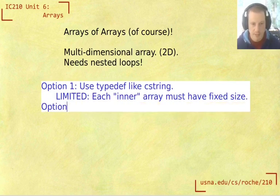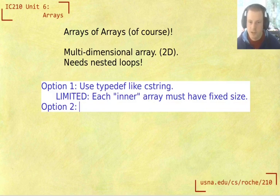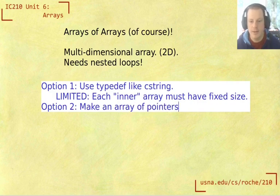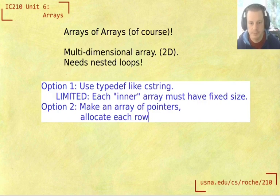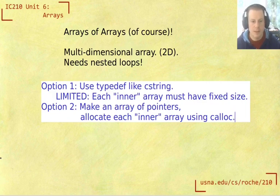And so the more general option, but also the more challenging one for us to write, is to make an array of pointers, and then separately allocate each row and then allocate each row of the array, array, or each sub inner array, using calloc. And so let's see how that works.